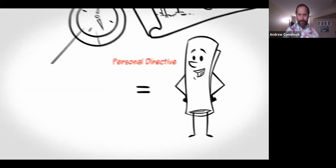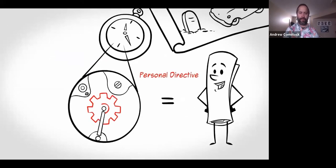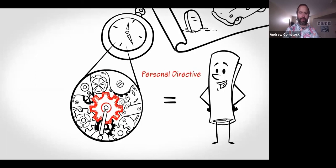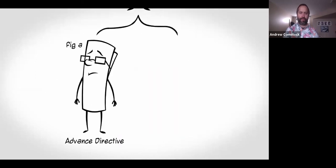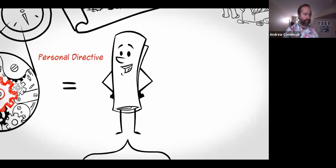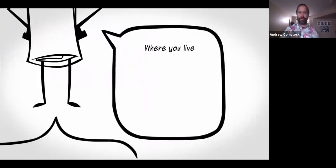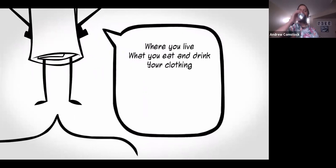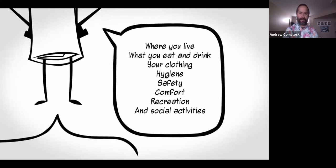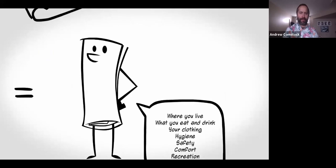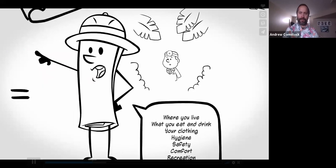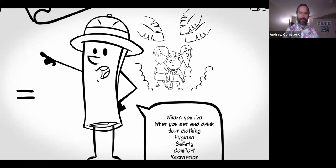There's a simple tool called a personal directive. A personal directive is a key component of planning in advance about your future care by thinking and talking about your wishes with your loved ones and those who provide your care. It's similar to an advanced directive or a living will. However, in addition to providing instructions about your healthcare and treatment, it allows you to plan for such things as where you live, what you eat and drink, your clothing, hygiene, safety, comfort, recreational and social activities, and community services. A personal directive serves as a guide for your family and care providers. It only comes into effect when you are unable to make your own care decisions.